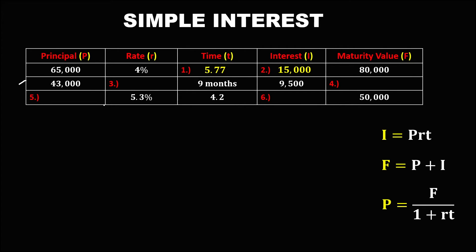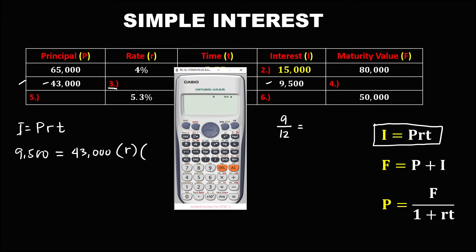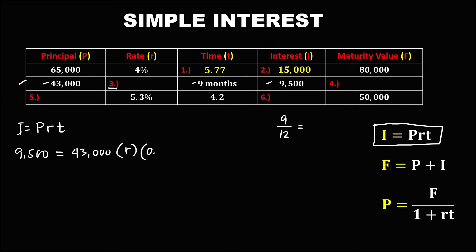For the next problem, we need to find the rate. Using the formula I = P × r × t, we have 9,500 equals 43,000 times the rate times the time. Since the given time is in months, we need to convert 9 months to years by dividing 9 by 12, which equals 0.75. So the time is 0.75 years.